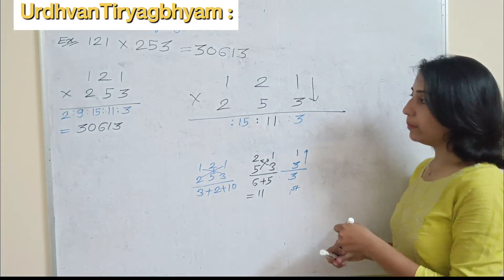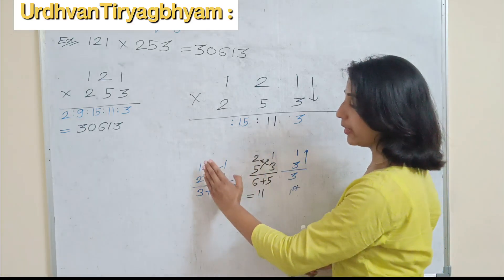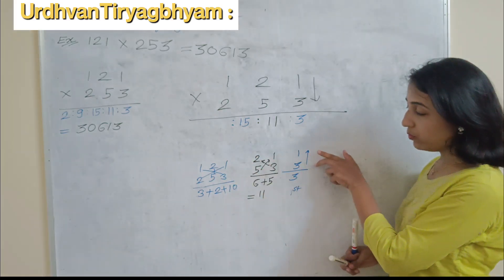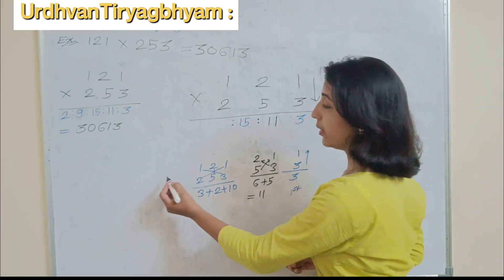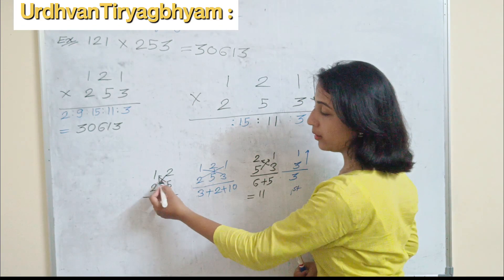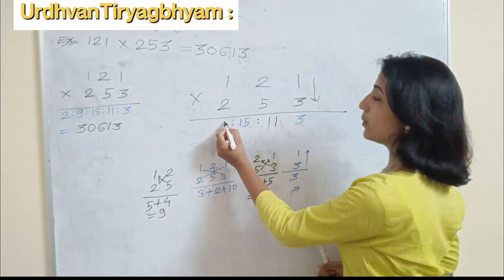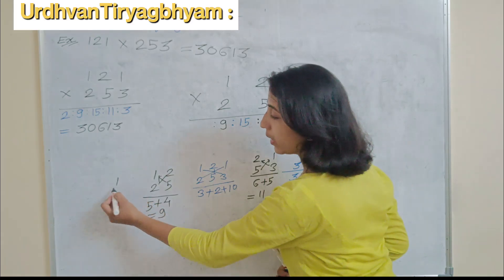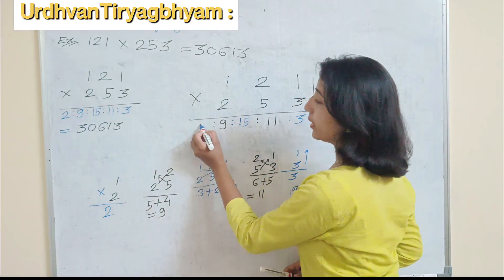Now next — there is no new pair to add, so we reduce one pair at a time, starting from the right side. Remove the 1 and 3 pair; the remaining digits are 1, 2, 2, 5. With four numbers, the cross product gives: 1 into 5 is 5, plus 2 into 2 is 4, giving an addition of 9. So here we write 9. Next, remove one more pair, leaving 1 and 2. The product of 1 and 2 is 2.